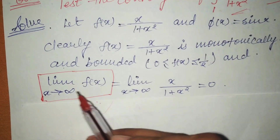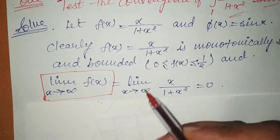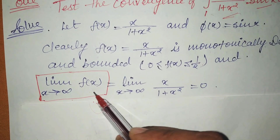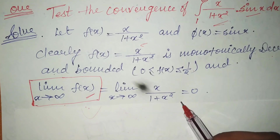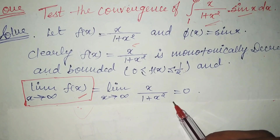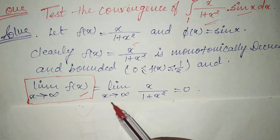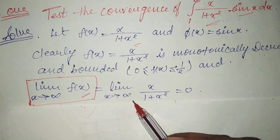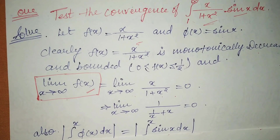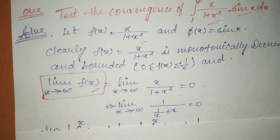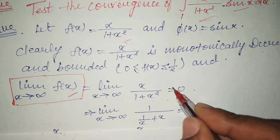The second condition: limit as x tends to infinity of fx = limit as x tends to infinity of x/(1+x²). When you put x tends to infinity, you will get 0. Let me show you how.